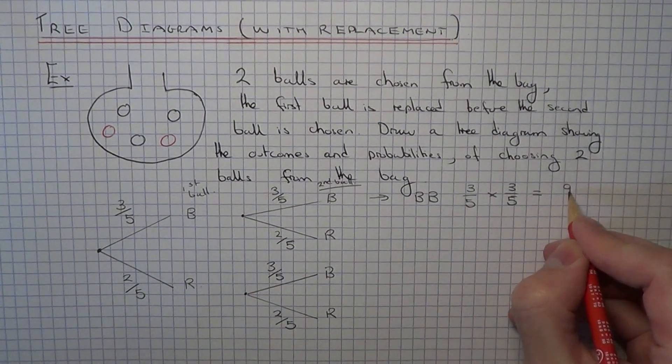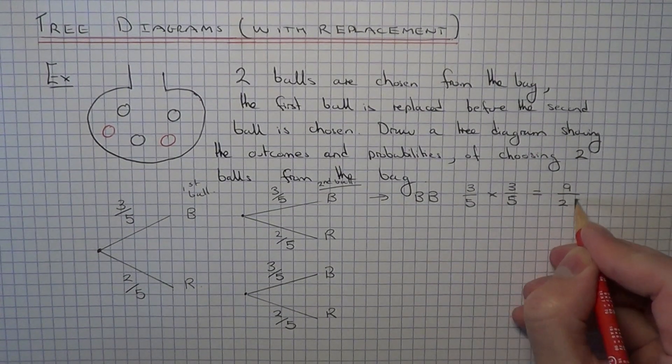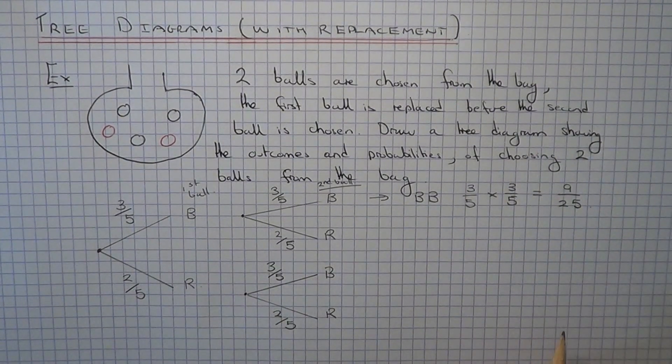So 3 times 3 is 9, 5 times 5 is 25. So the probability of two black balls is 9/25.